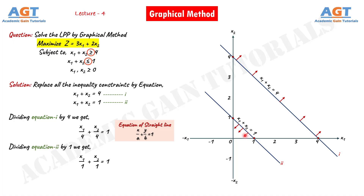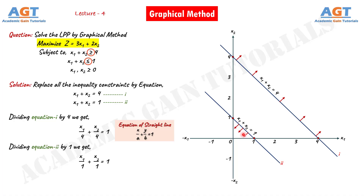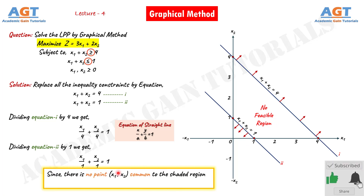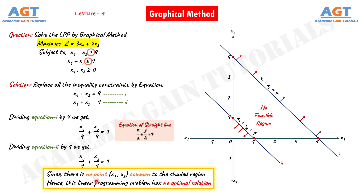Now we have to find the common region for these two lines satisfied by the direction of the arrows. Line 1's arrow faces opposite to the origin, so line 1 covers the area opposite to the origin. Line 2's arrow faces towards the origin, so line 2 covers the area towards the origin. Since the arrows are facing in opposite directions from one another, there is no common or feasible region covered by the two lines on the graph — we will not get any feasible region in this scenario. Therefore, we can finally write that since there is no point common to the shaded region, there is no feasible region. Hence, this linear programming problem has no optimal solution. This was an example of no optimal solution or no feasible region by graphical method for a linear programming problem.